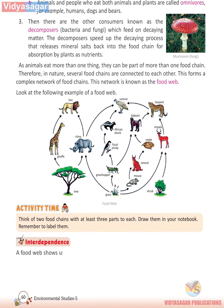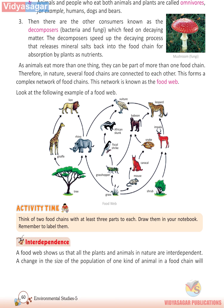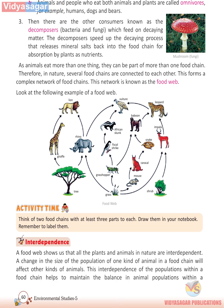Interdependence: A food web shows us that all the plants and animals in nature are interdependent. A change in the population of one kind of animal in a food chain will affect other kinds of animals. This interdependence of populations within a food chain helps to maintain the balance in animal populations within a community.